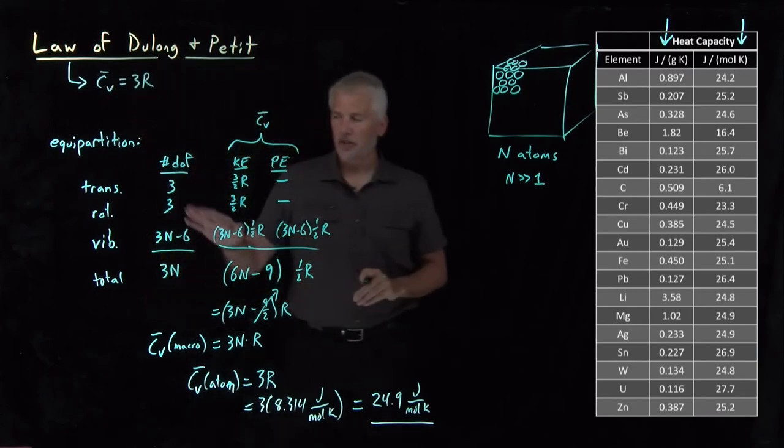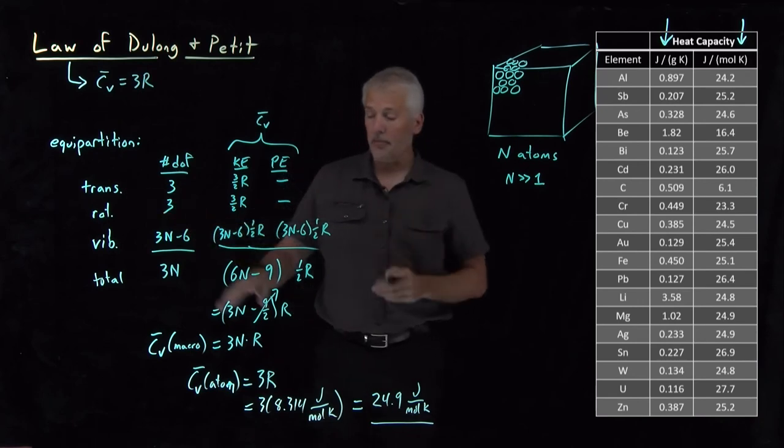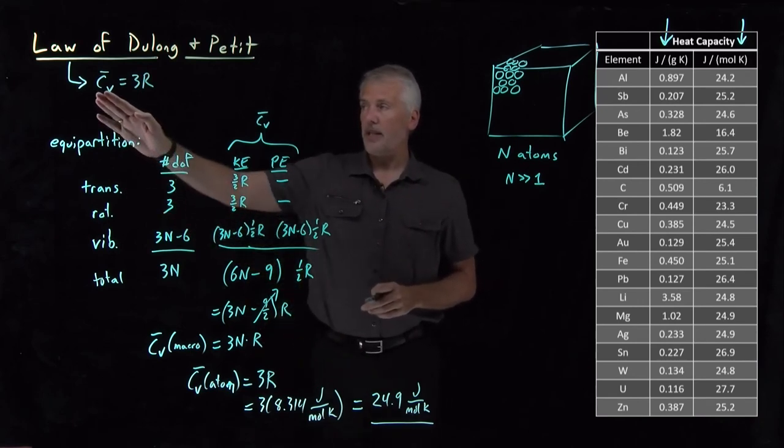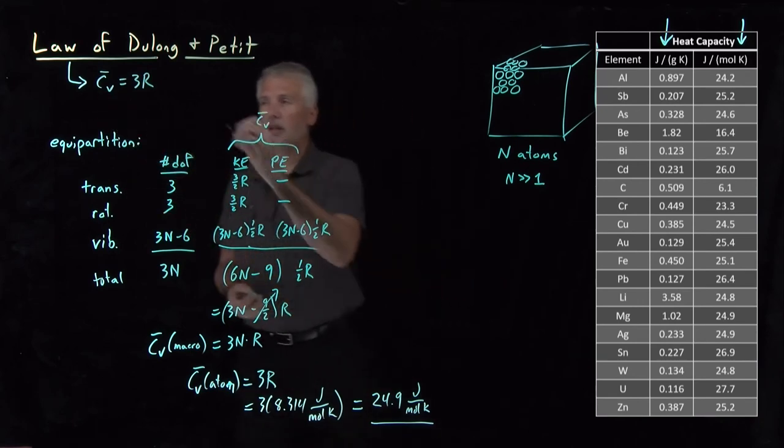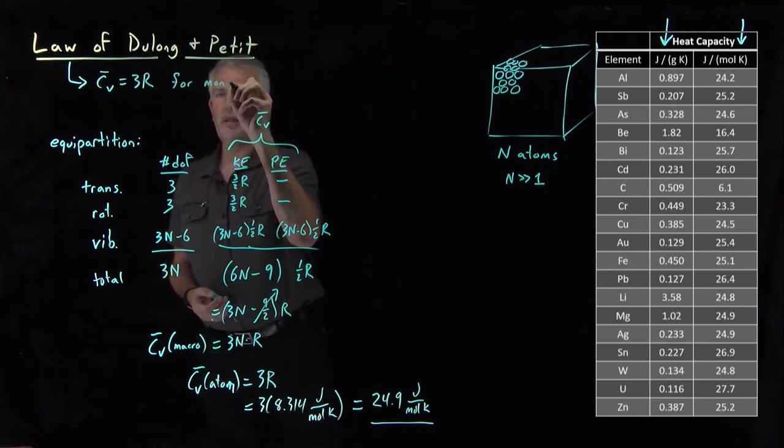We can, with our additional information about the equipartition theorem, simplify that a bit and say that the heat capacity is 3R for any monatomic solids.